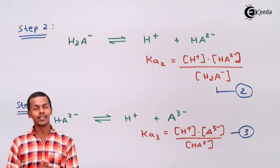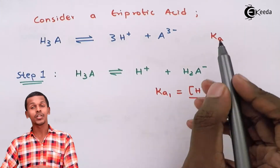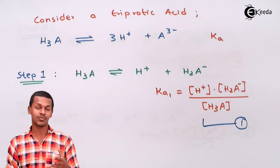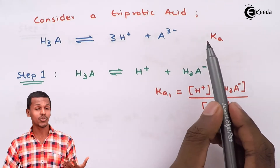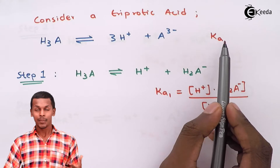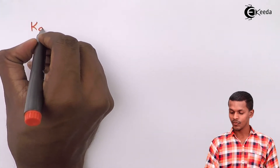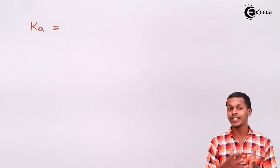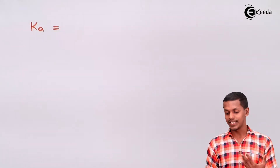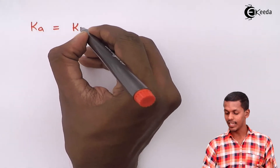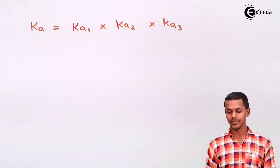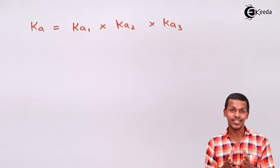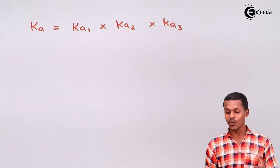For the overall dissociation constant Ka of the acid in one step, it has been observed that Ka equals the product of all individual dissociation constants: Ka = KA1 × KA2 × KA3.